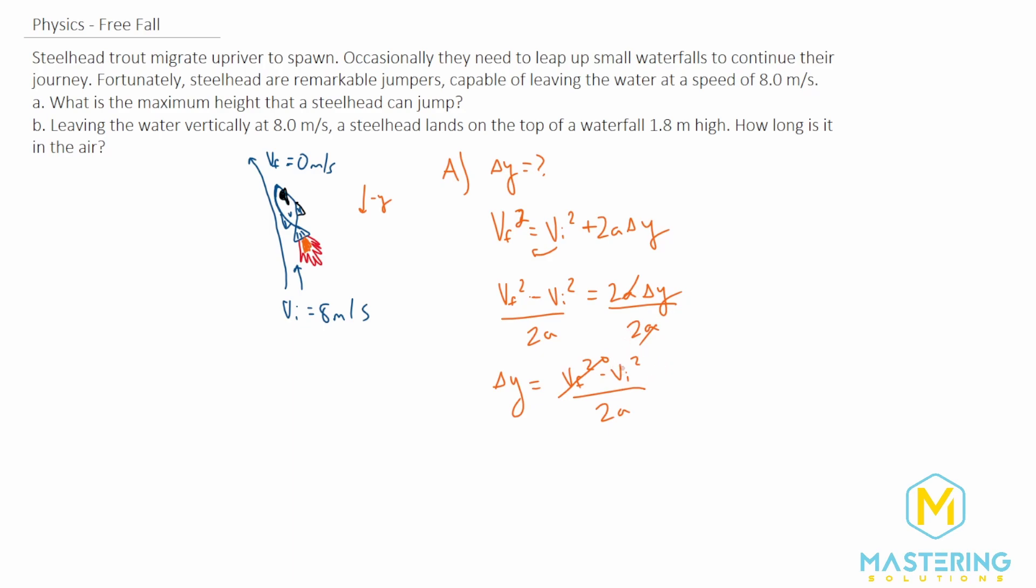You could put it in if you want but we're saving ourselves a step. The very last equation now is delta Y equals negative V_i squared. Be sure that the negative stays over 2, and A in this case will be G or negative G. We need the negative on top because we're going to have a positive delta Y, and with a positive on top and negative G on the bottom, that will give us the correct sign for our answer.